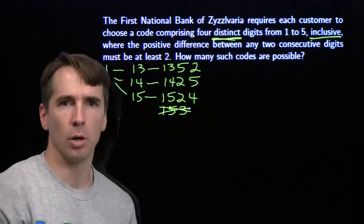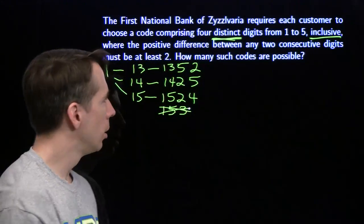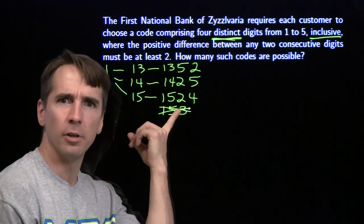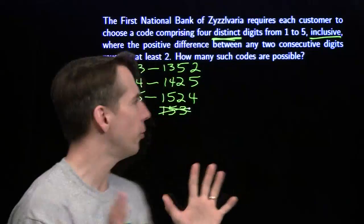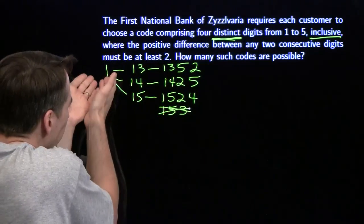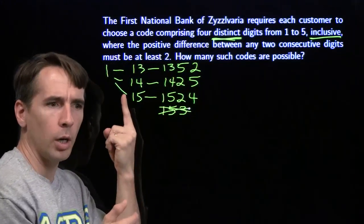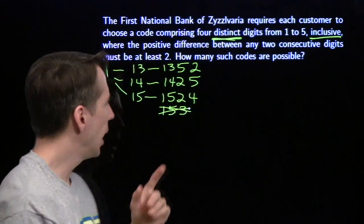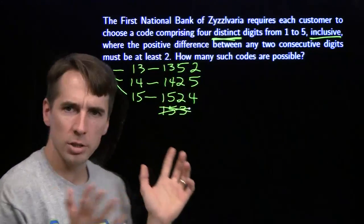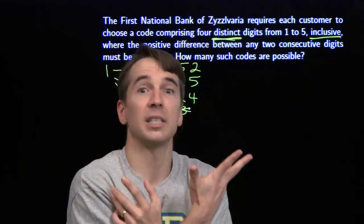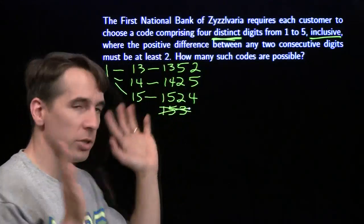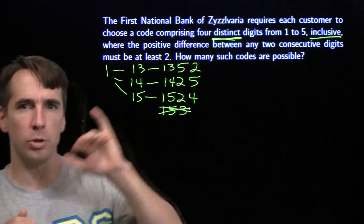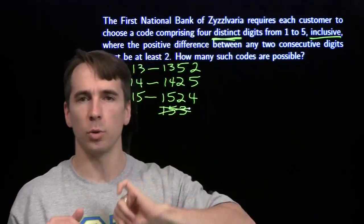We can use these to find the possibilities that start with five using symmetry — very powerful in counting problems. We started with the lowest number, one. What if we start with the highest? Every time we have the second-lowest number, two, replace it with the second-highest, four. The middle number stays in the middle. The second-highest becomes the second-lowest — replace all fours with twos and all fives with ones.